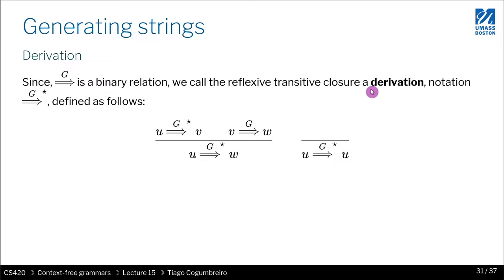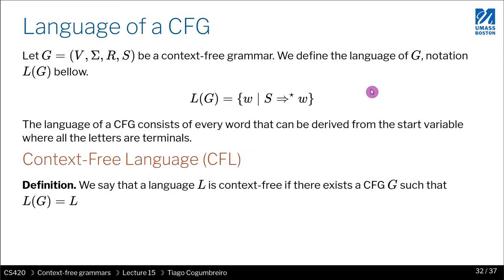So what is the language of a context-free grammar? It's going to be all the strings where you start with the initial variable S and you derive the string w that you want in zero or more steps. There's an additional restriction we're not showing here, which is that w must only contain terminals. So these are all strings that are accepted by the given grammar.